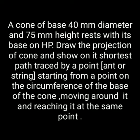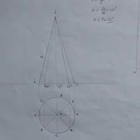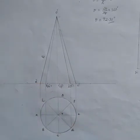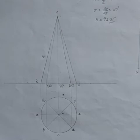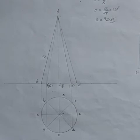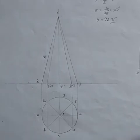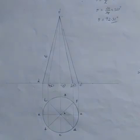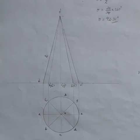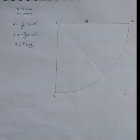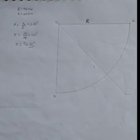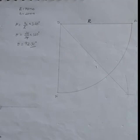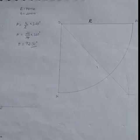Now let's look at this. The ant starts at the base point — this is a small point — and this is the shortest path. We will see the development. At the top: A, B, C, E. This is the development. The capital R is the slant height. We take theta. We have the value of R. Now we write theta using the formula: small r divided by R, into 360. The answer for theta is 92.31 degrees.